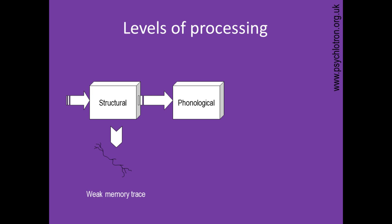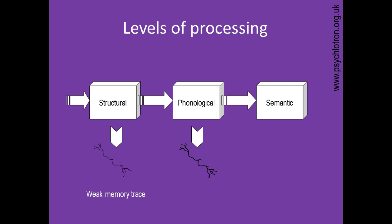This leaves an intermediate memory trace. The deepest level of processing is semantic — this is looking at things for meaning. You could be asking: does the word fit in this sentence, or does the word have the same meaning as this word? Such semantic processing leaves the strongest memory trace. So we call structural processing the shallowest and semantic processing the deepest. You could probably expect that semantic processing would take longer than structural processing.